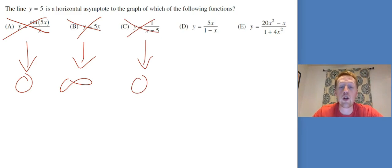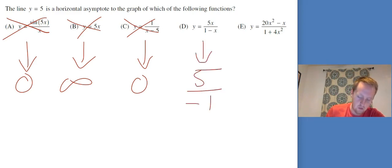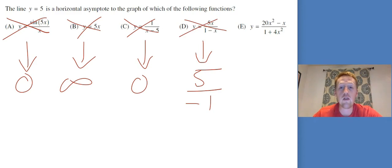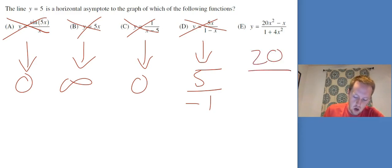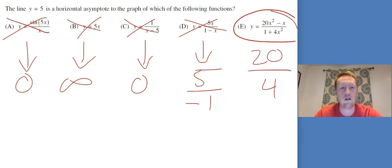y equals 5x gets bigger and bigger, so that goes to infinity. C, 1 over x minus 5, the bottom wins, so that goes to 0. For D, the exponent on top matches the bottom, x over x essentially, so I take the ratio of coefficients: 5 over negative 1, that's negative 5. For E, the degree on top matches the bottom again, x squared over x squared, so 20 over 4, that is 5. That's exactly what I'm looking for.